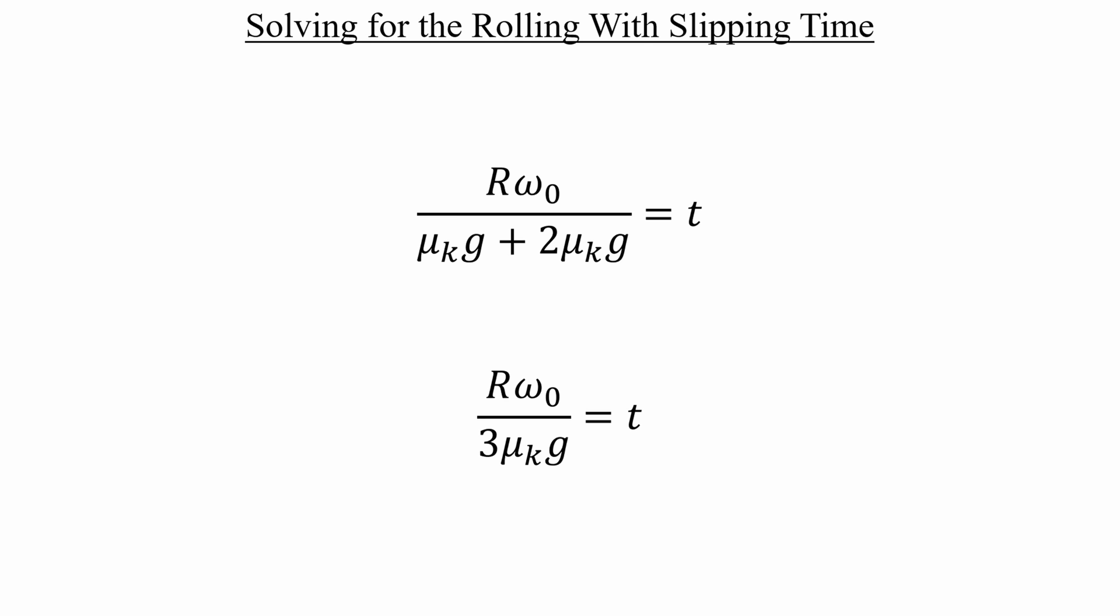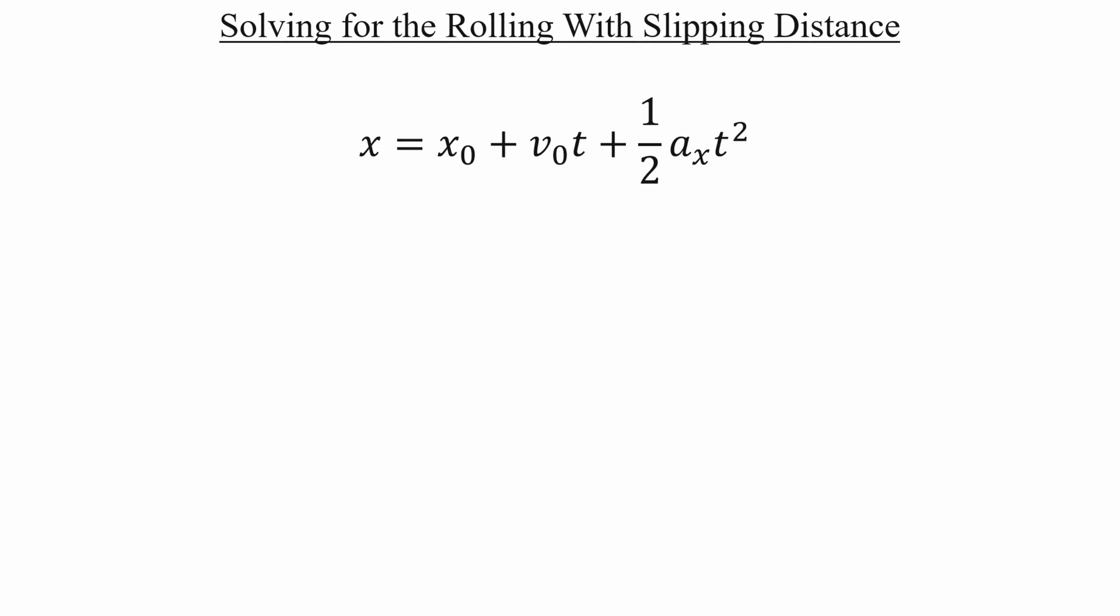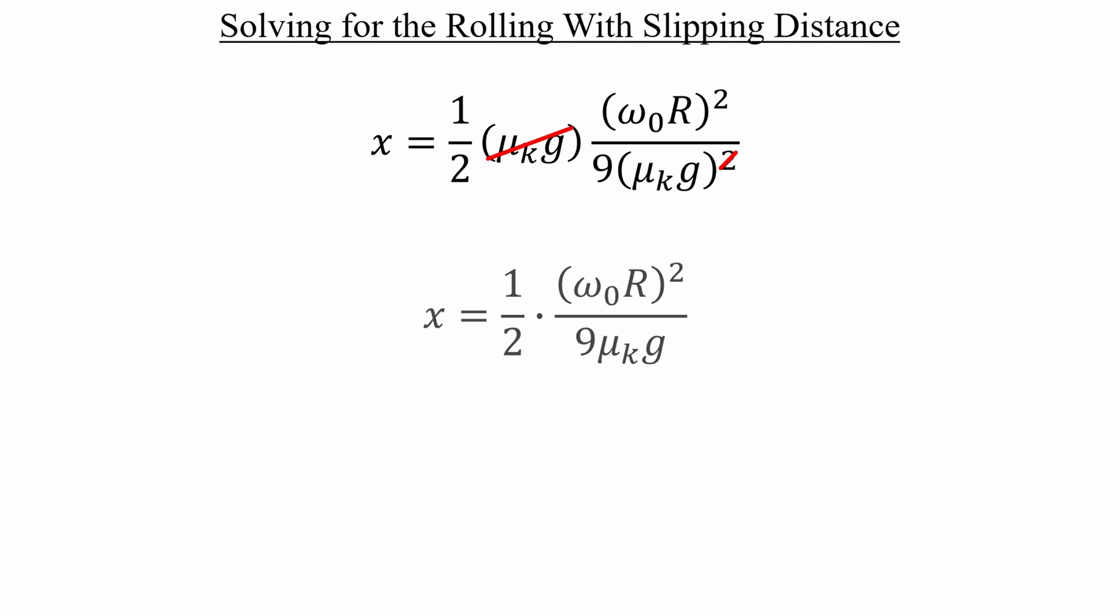Let's take this time and head over to the kinematic equation for distance. The first two terms in that equation can be eliminated. So let's clean this up, and then plug in our expressions for the linear acceleration and time. Let's distribute the square, and then cancel out a common factor of mu sub k times g. After simplifying, the 2 and the 9 in the denominator can be combined to give us 18. And part B is now done.